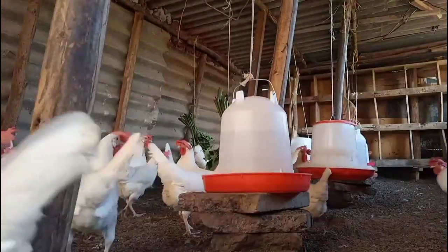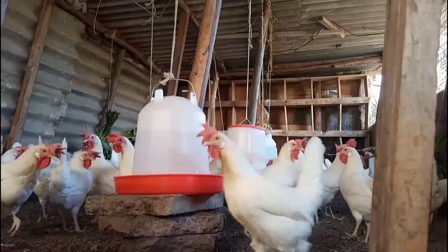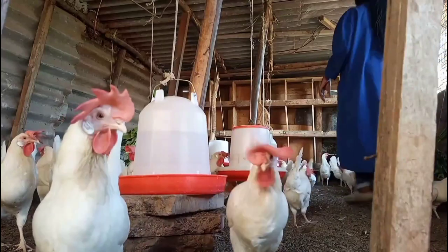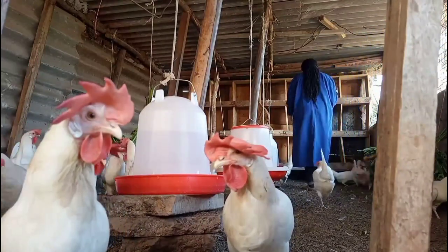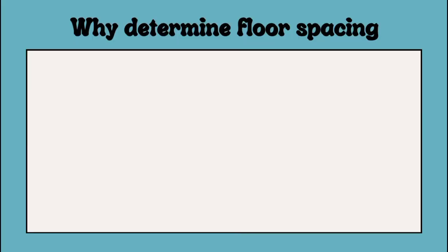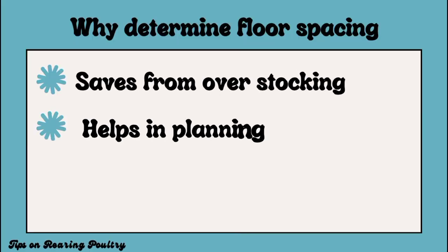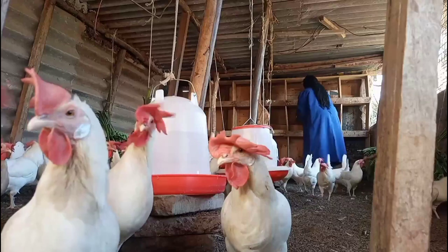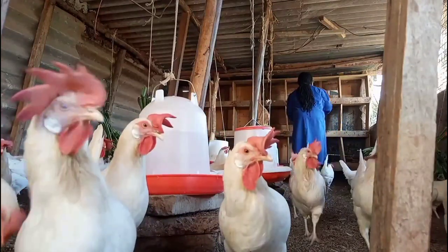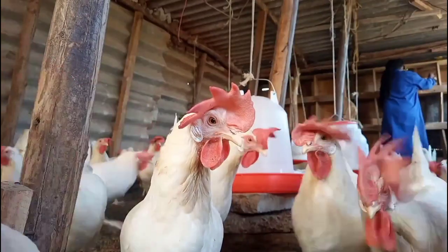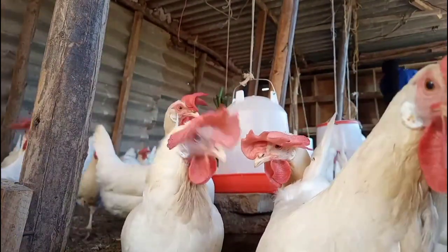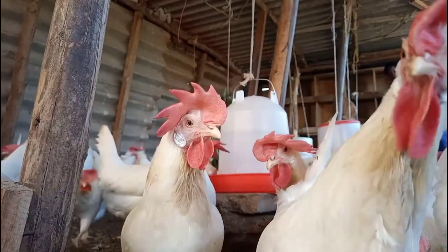All these problems can arise from unplanned floor spacing. It's important to carry out calculations or estimates to figure out how much spacing you need for your birds. Determining how many birds a house can hold can save you from overstocking and helps you plan how to place utilities such as feeders and drinkers.